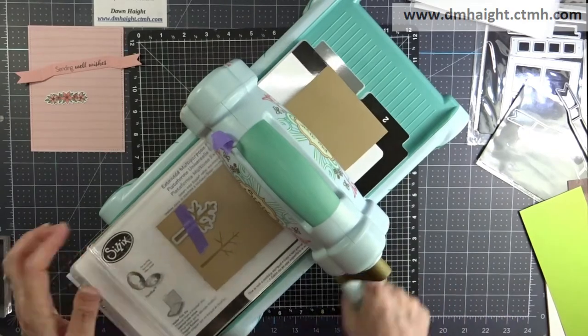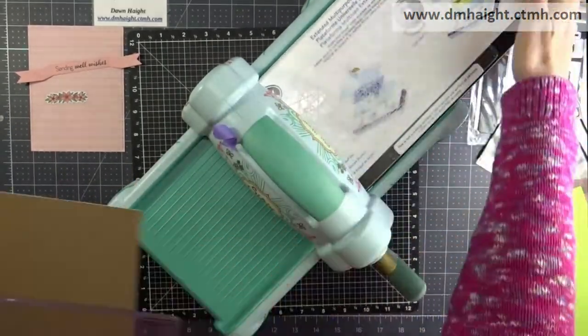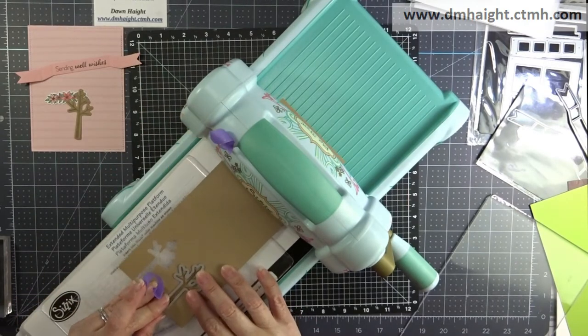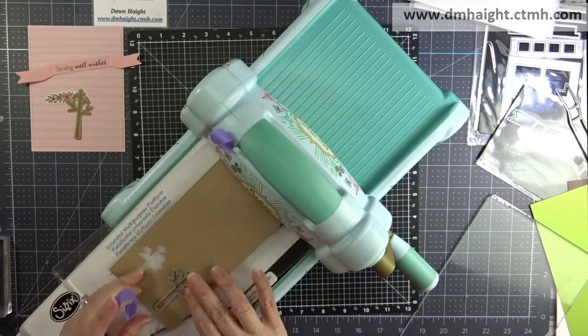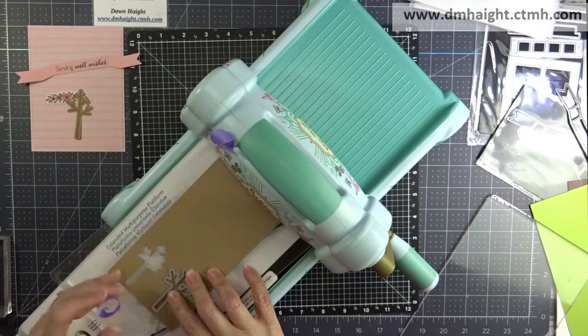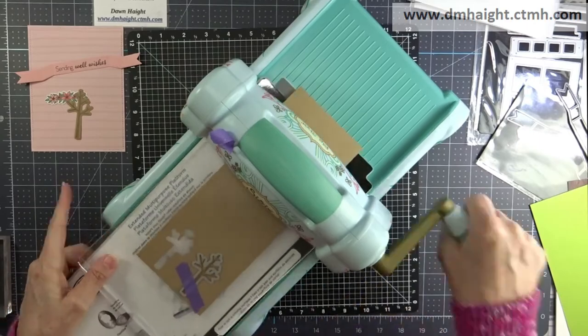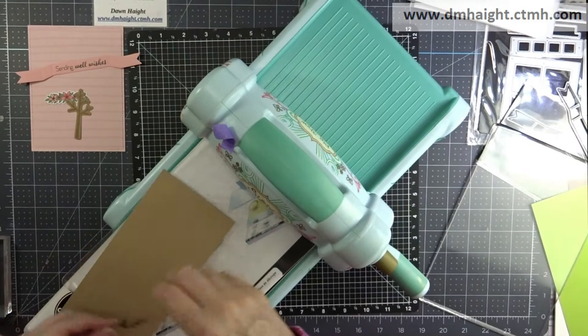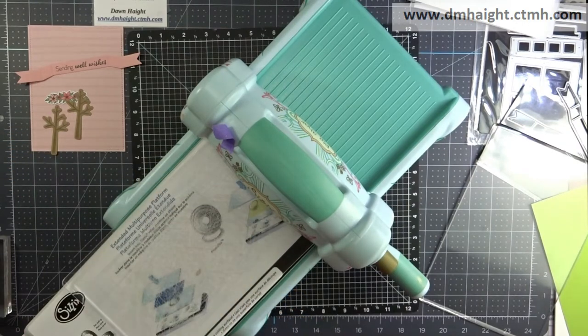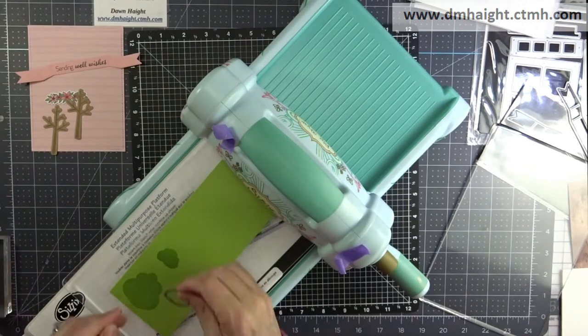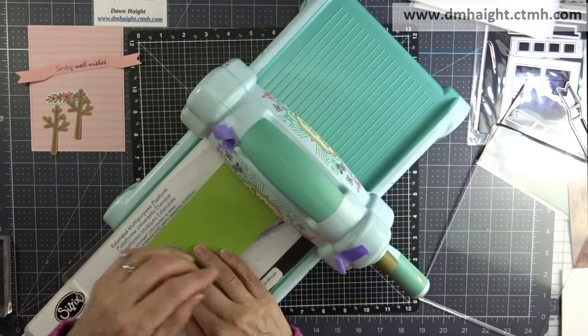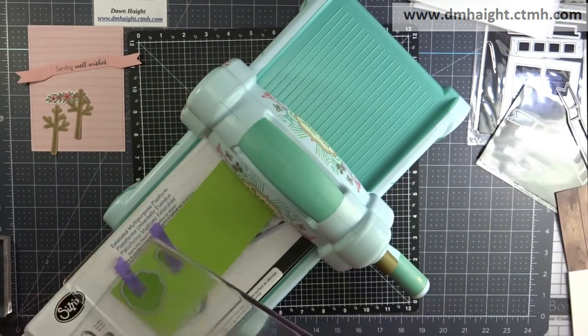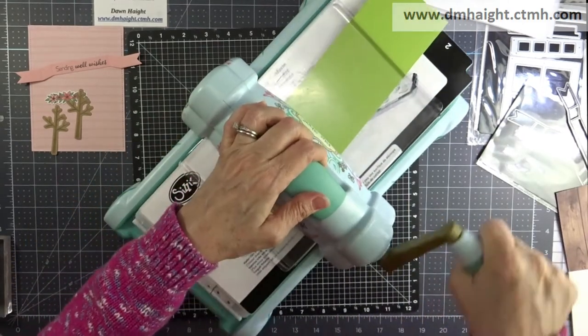So with the exception of that stitched rectangle thin cut from Lawn Fawn, everything that I'm using today is currently available in my online store. I'll make a list with links in the description below and you can go to the URL in the upper right corner of your screen to shop for these products. I'm just cutting everything out using the coordinating thin cuts. I've got the tree trunk and branches and now I'll cut out the tree tops.